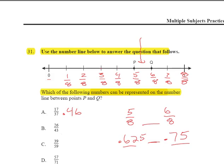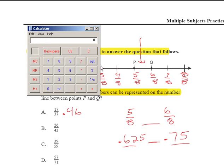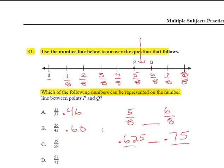I'm going to clear this out. I'm going to take 26 divided by 43 and this is going to give me 0.60. Whoopee. Does that fall between P and Q or 0.625 and 0.75? Absolutely not.